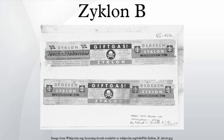Zyklon B was the trade name of a cyanide-based pesticide invented in the early 1920s and manufactured by German chemical conglomerate IG Farben. Zyklon B consisted of hydrogen cyanide, a stabilizer, a warning odorant, and one of several adsorbents.